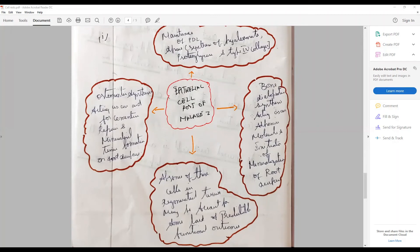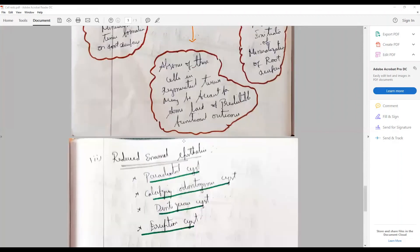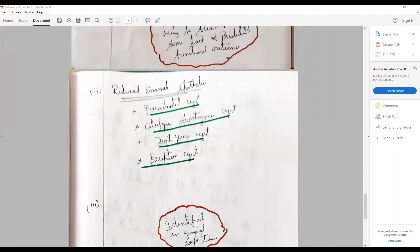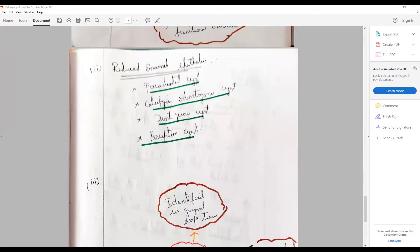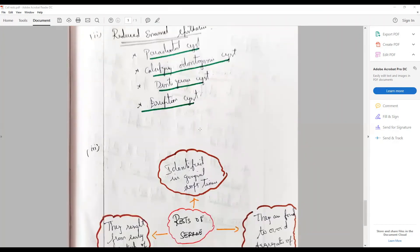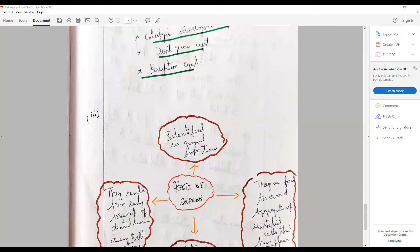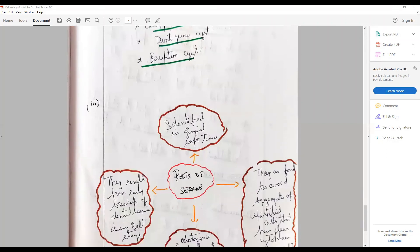The reduced enamel epithelium - how they give rise to different pathologies: paradental cyst, calcifying odontogenic cyst, dentigerous cyst, eruption cyst. He has described the cell rest of Serres where they are identified from the gingival tissues, breakdown of dental lamina during bell stage.